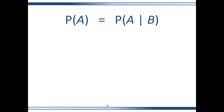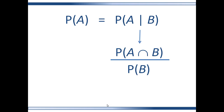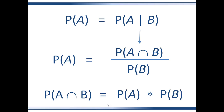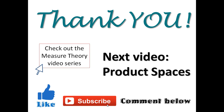This slide shows different ways of representing how to determine independence. This is the equality we just went over that indicates independence. Now the right side of the equality can be broken down into the equation for conditional probability, and taking this equality we can rewrite it — this is useful depending on the information available to us. So that's it for conditional probability and independence. Our next video will be on product spaces, and feel free to leave any of your thoughts in the comments below. Thank you.